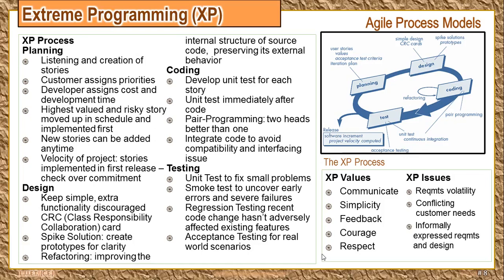Before coding, a unit test is developed for each story, and after coding is done the code is thoroughly checked with those test cases. A test case defines what the final output should be, and code is created based on that output. In coding, you also integrate your software because in an agile team many members may be working on different tasks. The main idea is to integrate all tasks on a daily basis so that there are no compatibility or interfacing issues later on, allowing the project to develop fast and compatibly.